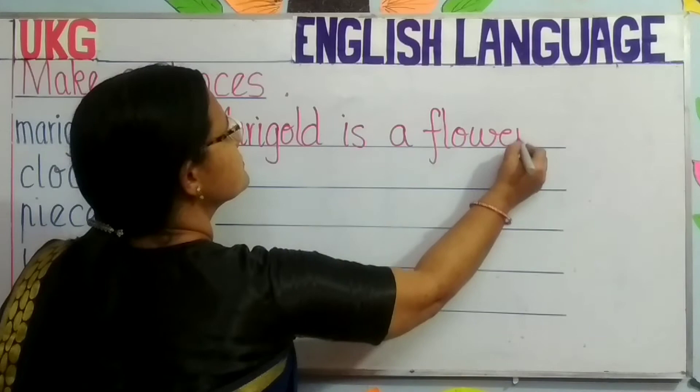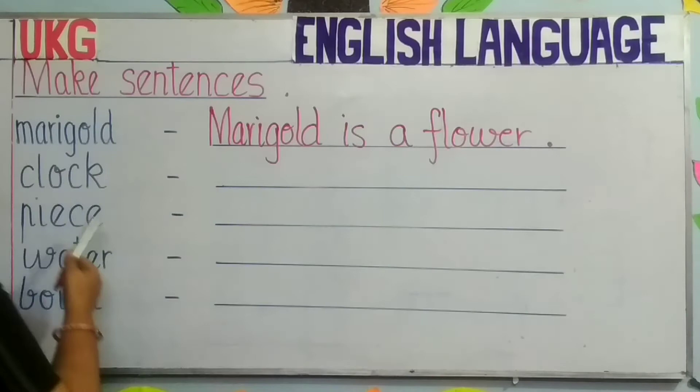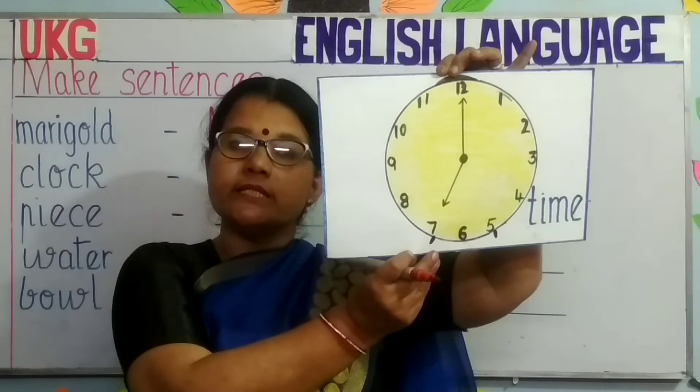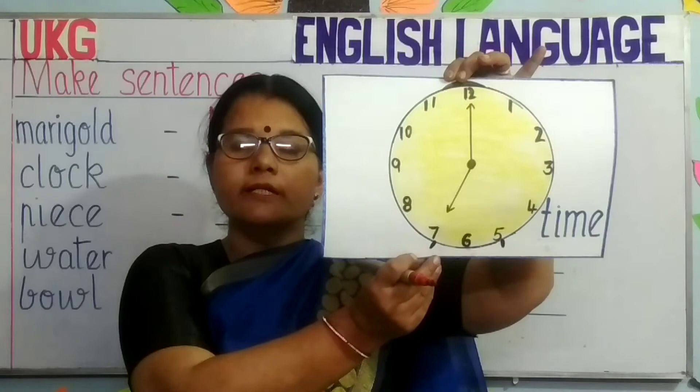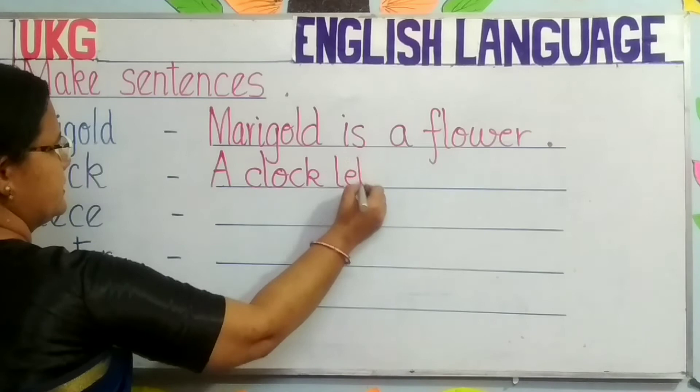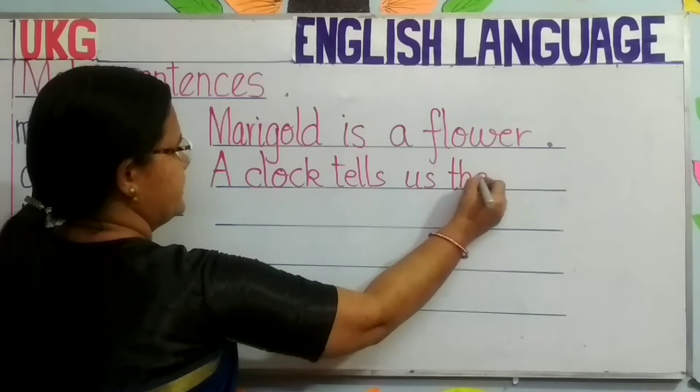The next word: clock. What is a clock, children? Have you seen a clock? Yes, this is a clock. What does a clock tell us? The clock tells us the time. So you can write this sentence: A clock tells us the time. You can also write: a clock is on the wall, a clock is on the table. You can write anything you wish.